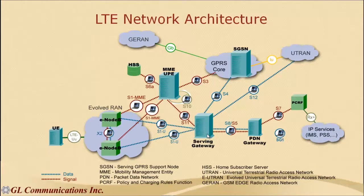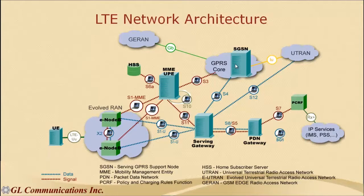The serving gateway terminates the interface towards the E-UTRAN. A UE can be connected to only one serving gateway at a time. It does packet routing — forwarding packets from E-NodeB towards the PDN gateway. It is also a local mobility anchor point for inter-E-NodeB handover as well as handover from EPC to other networks like 2G and 3G.